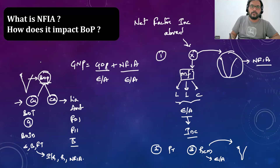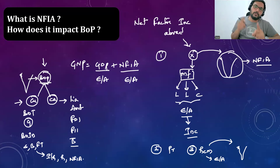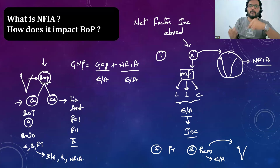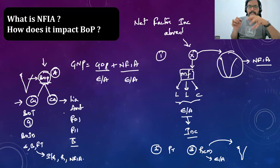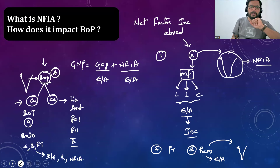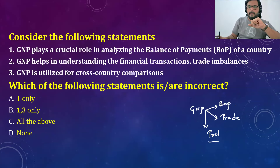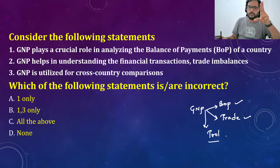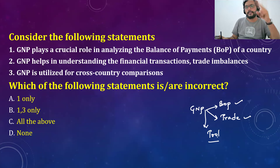NFIA, remittances, and interest payments are all added as part of the current account, not the capital account. Does NFIA make an impact on BOP? Definitely yes — NFIA directly impacts the current account. One involves economic activity, the other does not, but both are transactions reflected in the balance of payment. NFIA plays a dual role: it impacts BOP and is also added as a component into GNP, and it is related to trade.